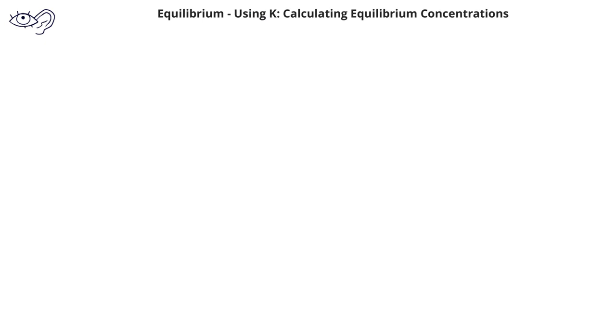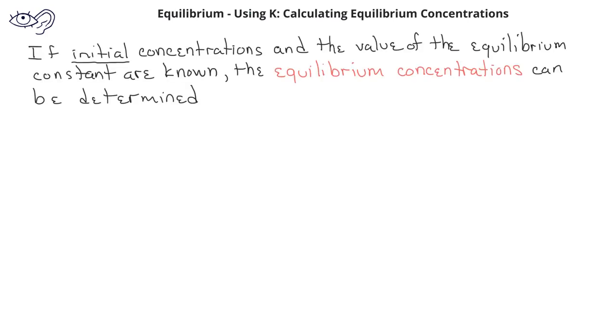Another way that we can use the equilibrium constant is the following. If we know the initial values for the concentrations of the reactants and products, and if we know the equilibrium constant for the system, then we can use these together to find the equilibrium concentrations of the reactants and the products.